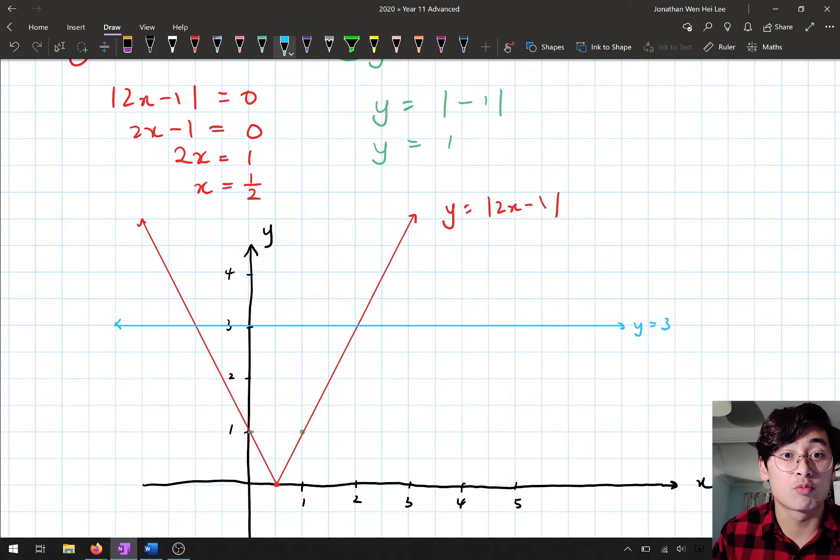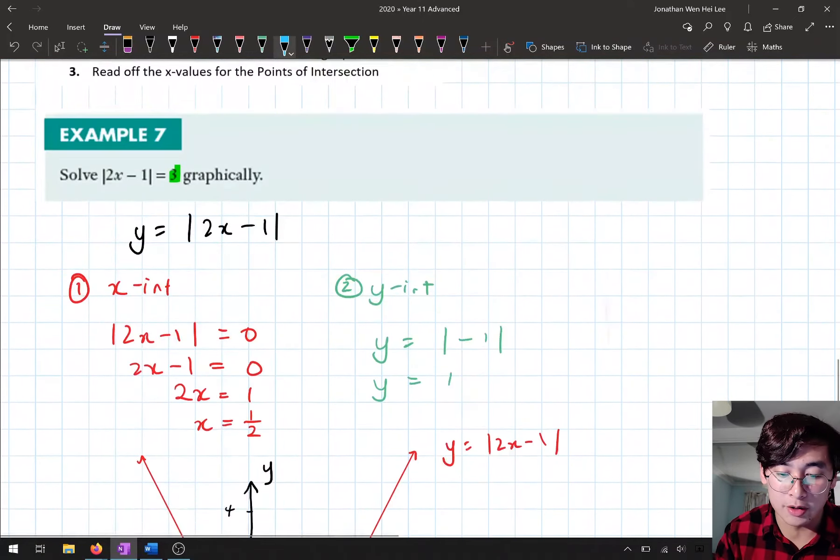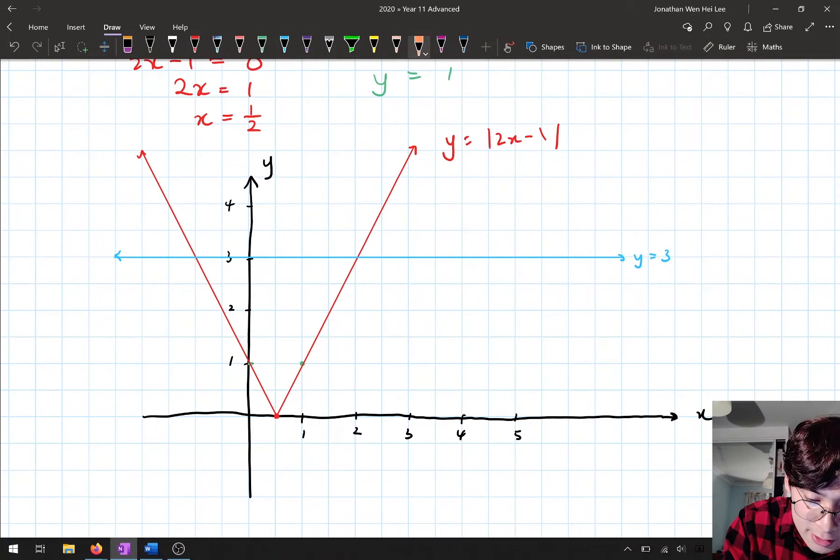And now that I've done that, I'm going to just read off the x coordinates of the points of intersection. So as you'll notice, there's two points of intersection, one here and one here. Now, if I drew the right hand side a little bit more accurately, you would have seen that it lined up perfectly. And so all I do is then I go down and I read off the x coordinates for those two points.